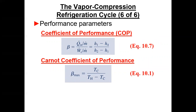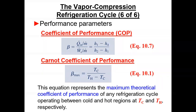Performance parameters: the coefficient of performance uses beta for the refrigeration cycle, which is the desired output — heat transfer into the evaporator per unit mass — divided by the compressor work per unit mass. Equation 10-7 is for the actual cycle using state-point enthalpies. For a Carnot cycle we only care about temperatures: TC is the temperature of the house and TH is the temperature of the ambient we're dumping heat to. Many problems give operational data so you calculate the real COP, then the Carnot COP, and compare — the Carnot gives the maximum theoretical performance.